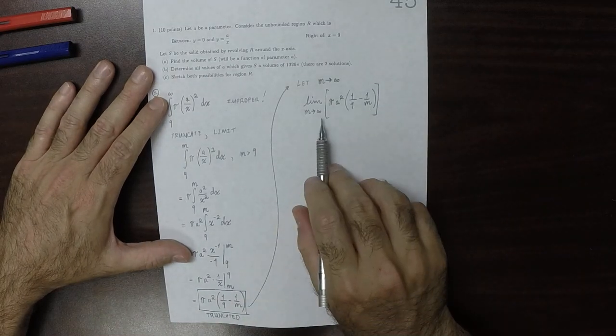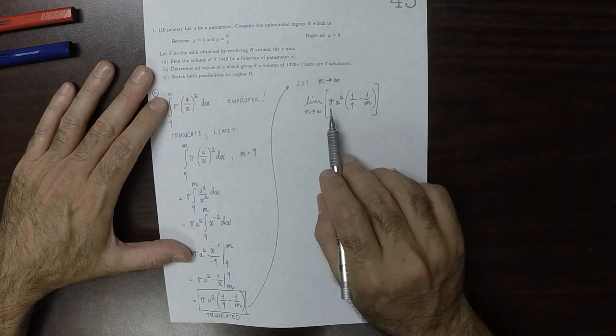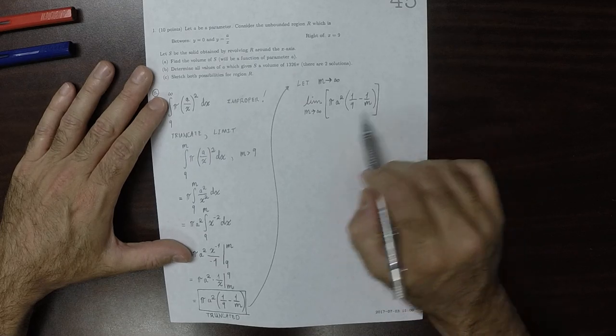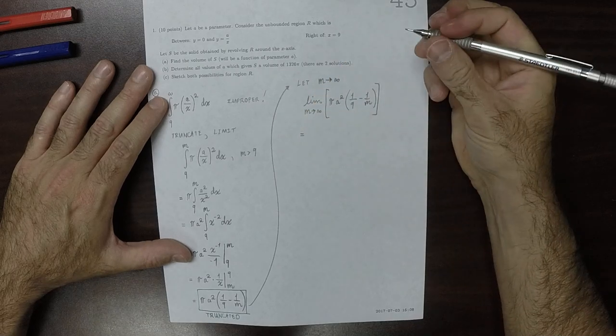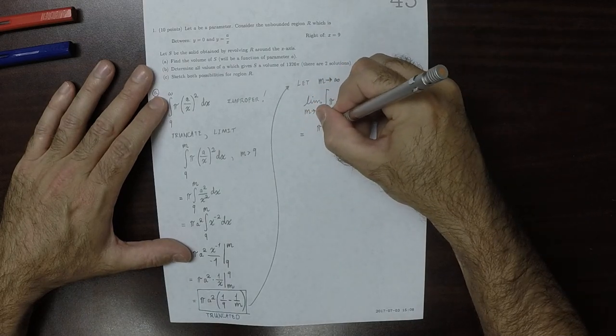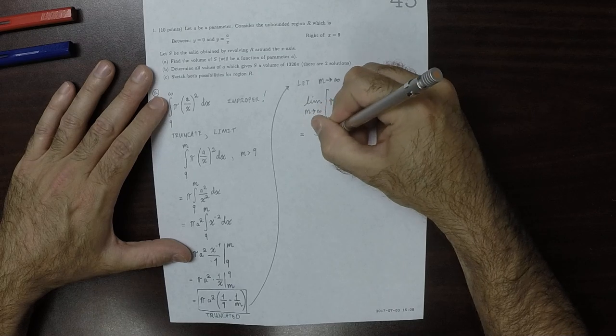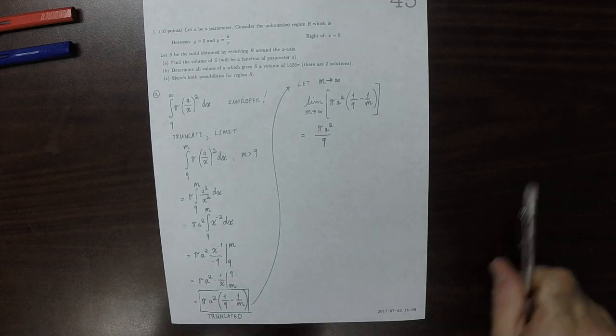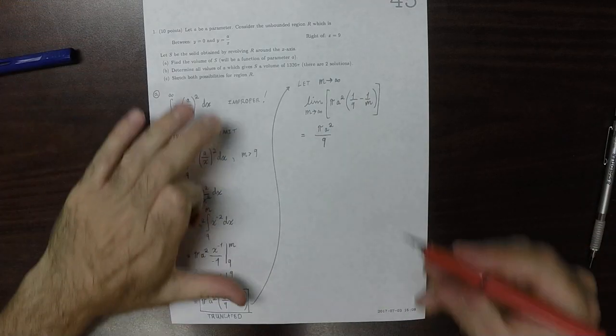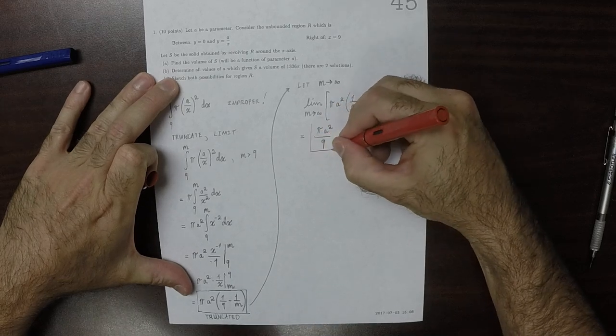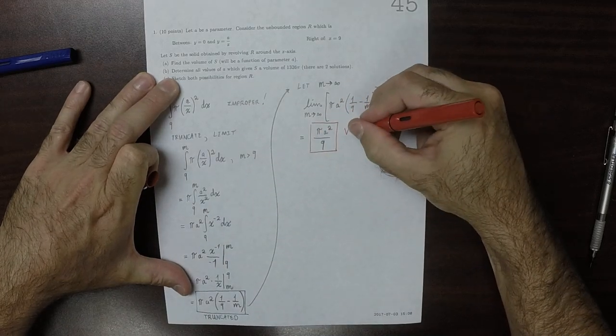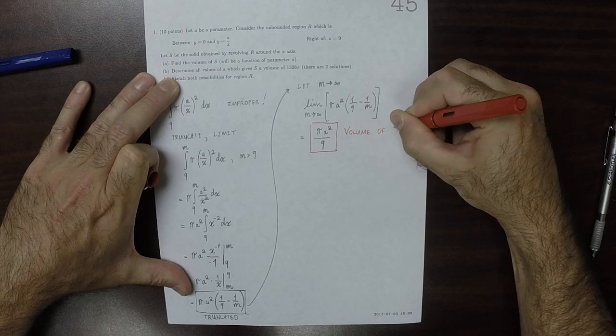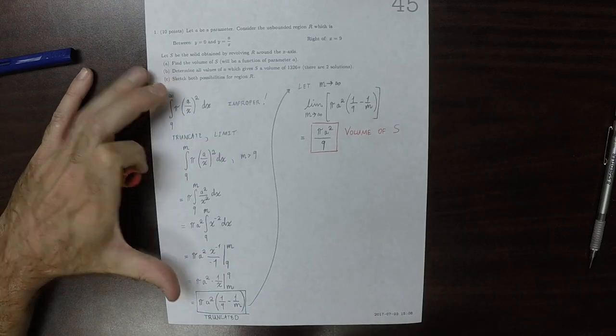Well, m is the only m in all of this. Pi is a constant, a squared is a constant, 1 over 9 is a constant, 1 over m goes to 0 as m goes to infinity. So this is equal to pi a squared over 9. Okay, so this is the volume of S, the volume of S.